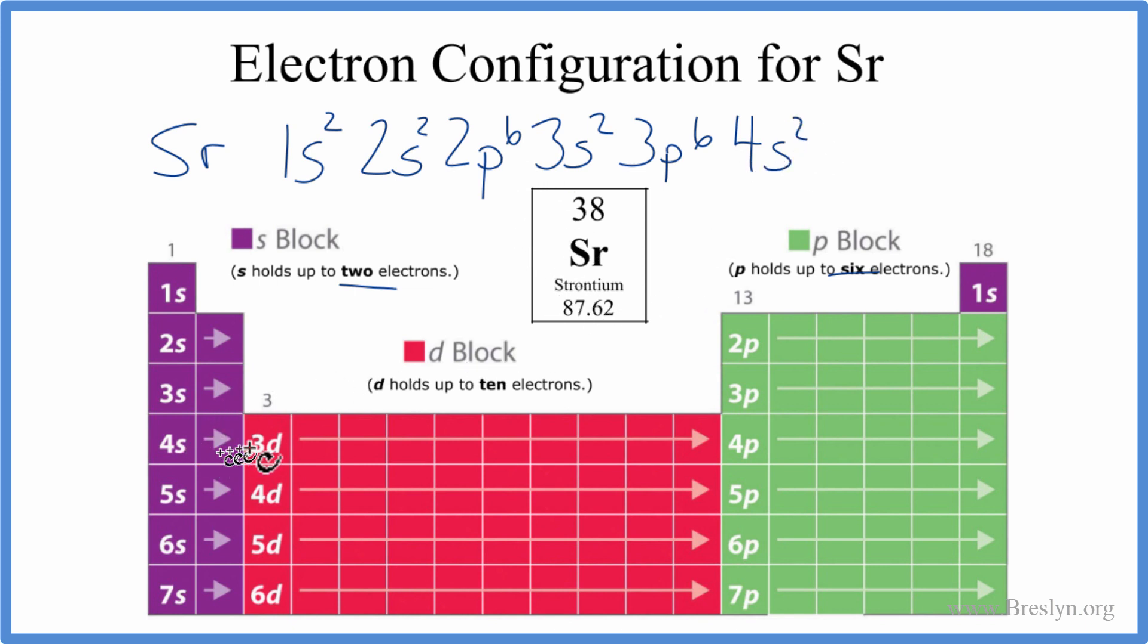Then we get from 4s to the 3d. D can hold up to 10. So we'll put our 3d, we'll put 10 in there. We've used 30. 4p⁶, that's 36. We need 2 more. So from the 4p, we go to the 5s. 5s¹, 5s². That gives us 38 electrons, and that's the electron configuration for strontium.